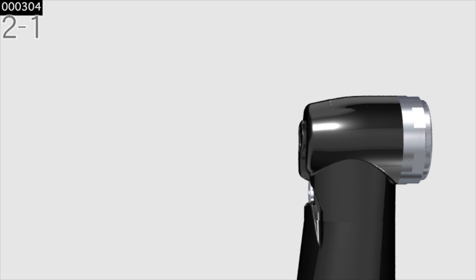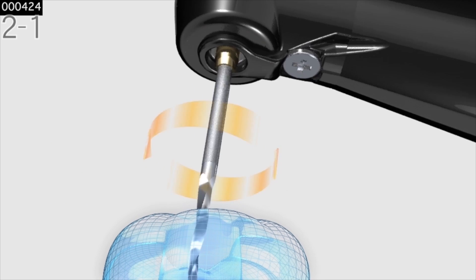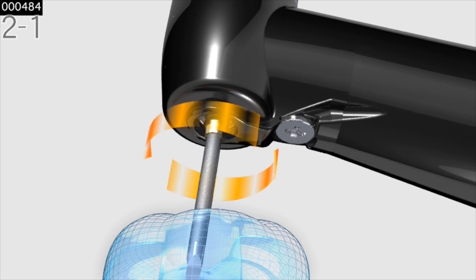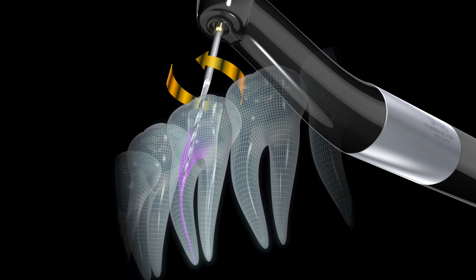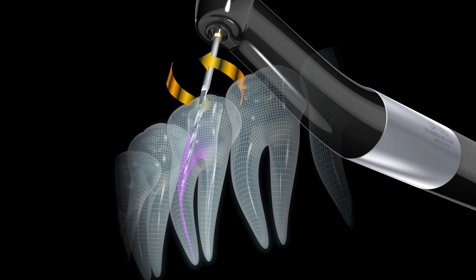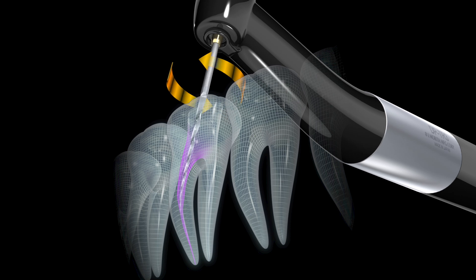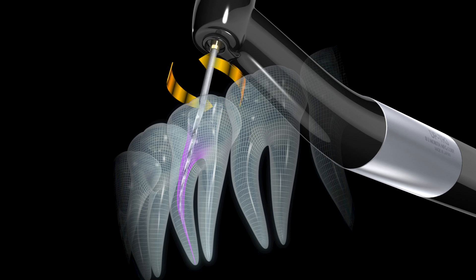The way OTR works is that you enter a torque limit value into the handpiece and then operate the file in a normal rotary motion. As soon as the motor senses that the file has reached the programmed torque limit during engagement, the file will automatically disengage 90 degrees in a counterclockwise direction, and then after disengaging, it immediately spins back into clockwise rotary motion — unless the same torque limit is reached once again, in which case it will go back again 90 degrees to disengage, followed by continuous rotation.